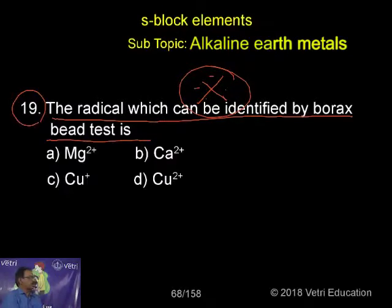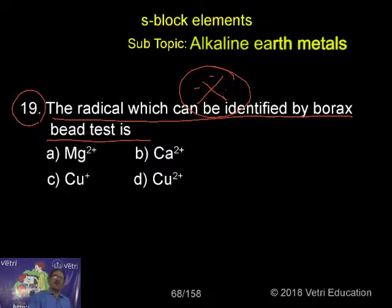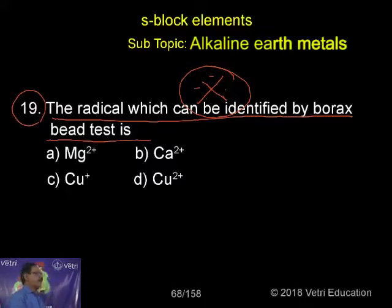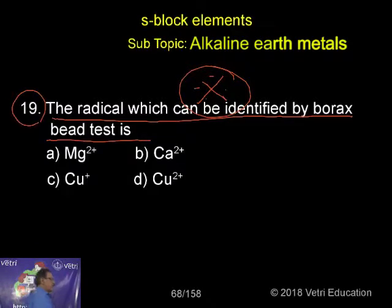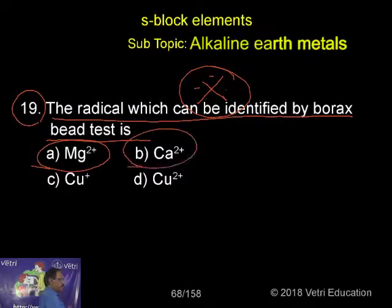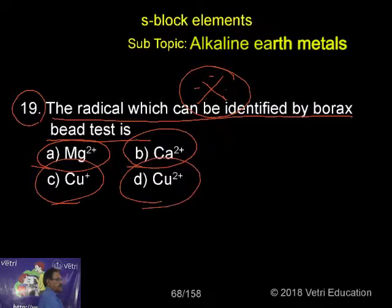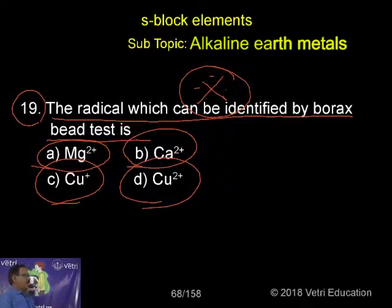Borax bead test is commonly used for a number of metal ions — alkali metals, alkaline earth metals, and transition metals. A number of metals can be identified by borax bead test. Four options are given: Magnesium 2+, Calcium 2+, Cu+, and Cu2+.